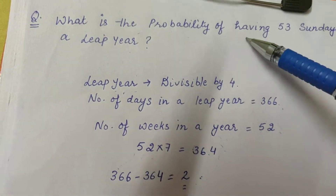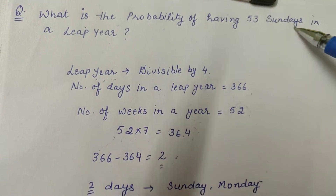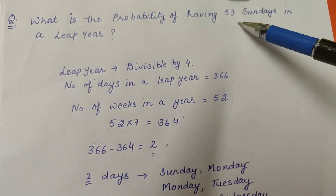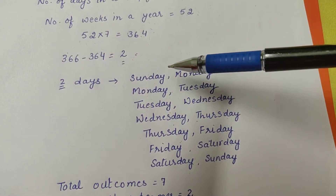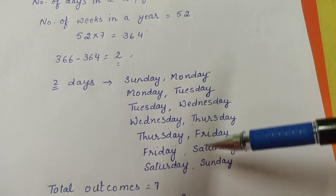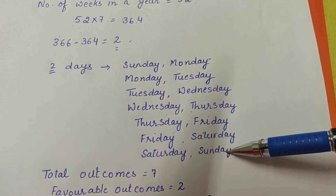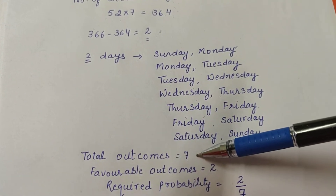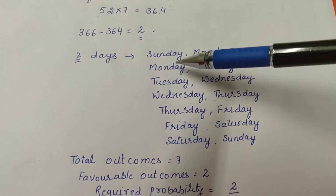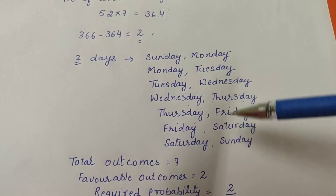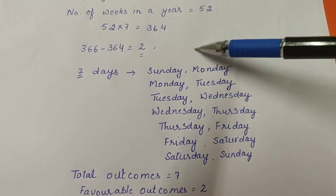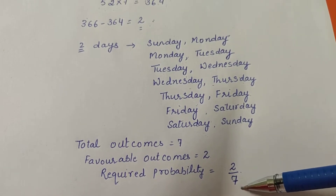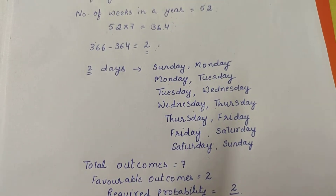Now the question is: what is the probability of having 53 Sundays in a leap year? We already have 52 Sundays. For a 53rd Sunday, check where Sunday appears in the combinations — Sunday–Monday and Saturday–Sunday. So there are two favorable outcomes. Total outcomes are seven, and favorable outcomes are two, giving a probability of 2/7.